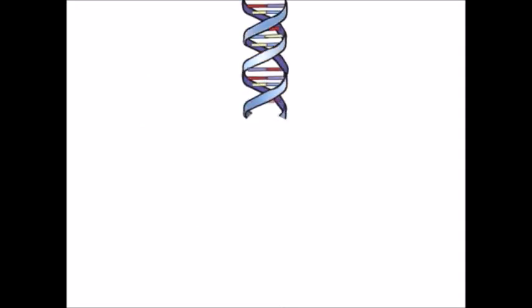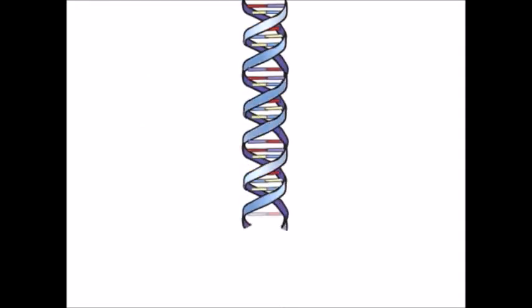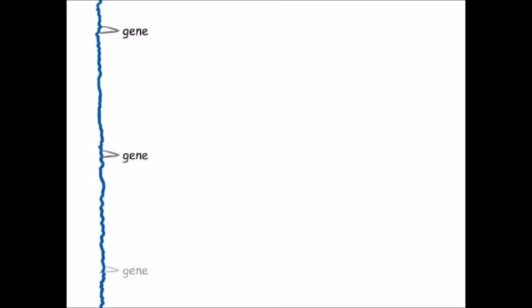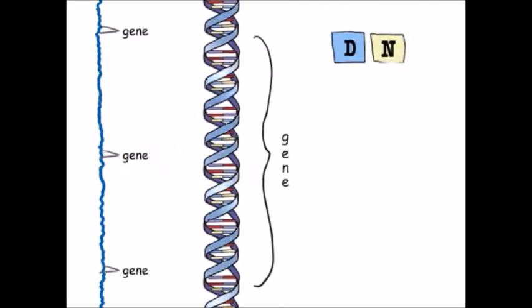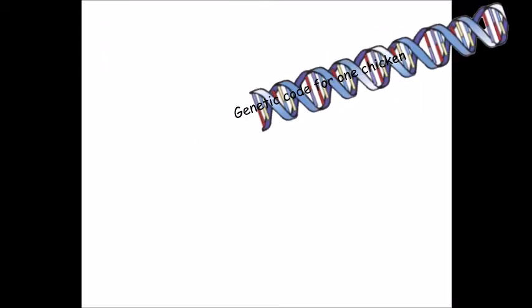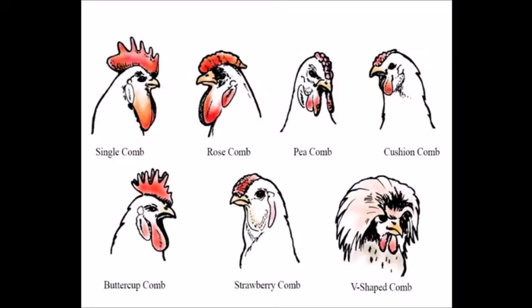Although the DNA code continues right along the whole length of each DNA molecule, we pay most attention to some sections of the DNA molecule that carry specific genes of interest. A gene is the basic unit of inherited information. It's a section of DNA that codes for a particular inherited thing, for example, the shape of a chicken's comb.